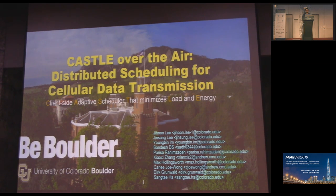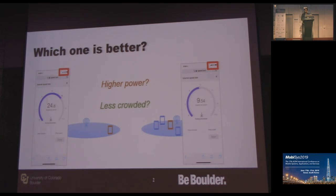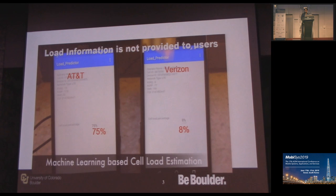We started with a small experiment on our campus using AT&T. We usually assume that a UE with a larger number of antennas or a stronger signal would give better speed compared to one with fewer antennas or a weaker signal. But that's not the whole picture — the throughput achievable also depends on the crowd, or the number of UEs present within the cellular channel. This information is not usually given to users, but we developed a model and application to measure cell load at any given point in time.